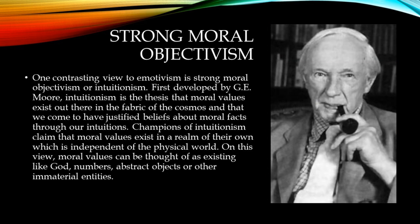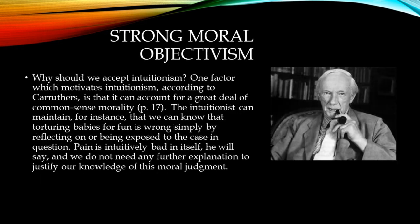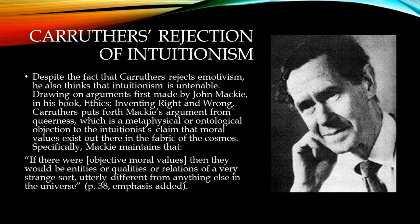One contrasting view to emotivism is strong moral objectivism, or intuitionism. First developed by G.E. Moore, intuitionism is the thesis that moral values exist out there in the fabric of the cosmos and that we come to have justified beliefs about moral facts through our intuitions. Champions of intuitionism claim that moral values exist in a realm of their own, which is independent of the physical world. On this view, moral values can be thought of as existing like God, numbers, abstract objects, or other immaterial entities. One factor which motivates intuitionism, according to Carruthers, is that it can account for a great deal of common sense morality. The intuitionist can maintain, for instance, that we can know that torturing babies for fun is morally wrong simply by reflecting on the case in question. Pain is intuitively bad in itself, and we do not need any further explanation to justify our knowledge of this moral judgment. Despite the fact that Carruthers rejects emotivism, he also thinks that intuitionism is untenable.